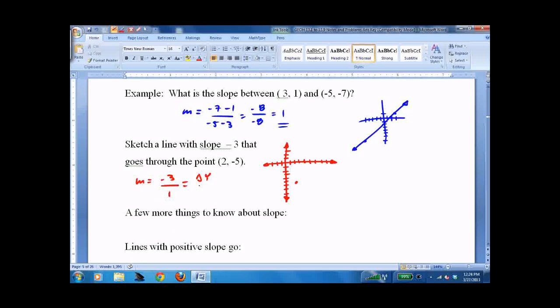Over my change in x. So down 3, 1, 2, 3, to the right 1. Or up 3, 1, 2, 3, to the left 1.